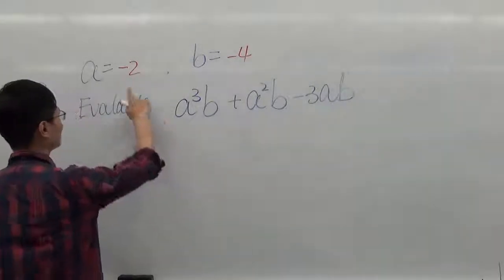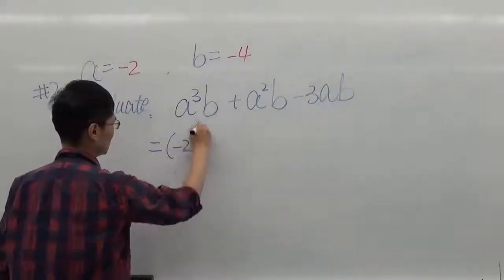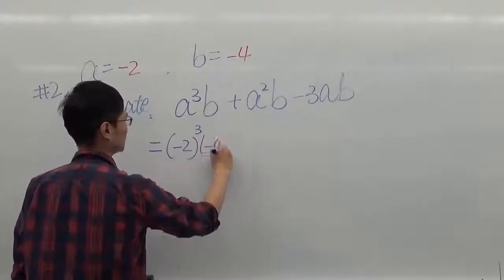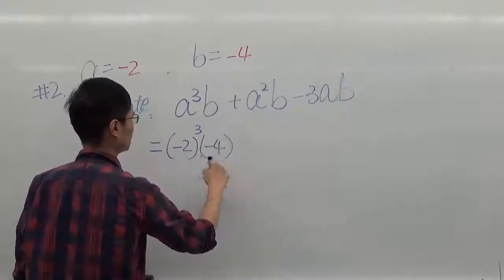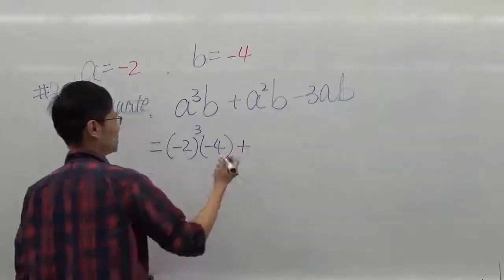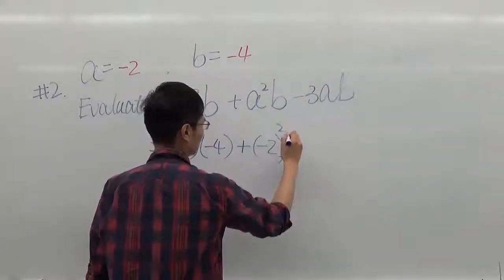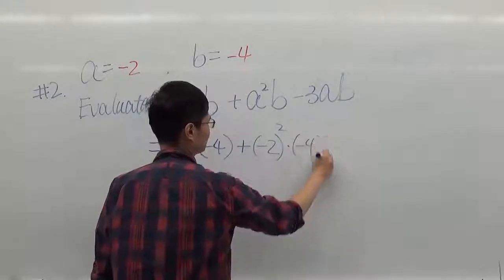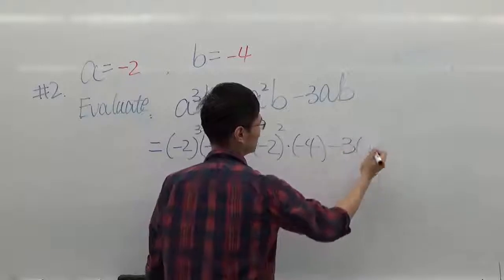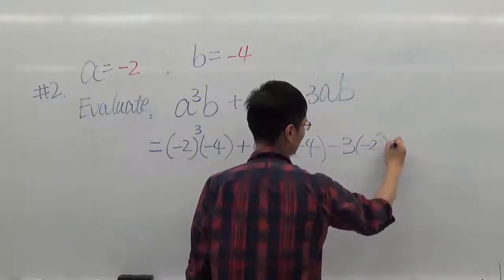So A is negative 2. We're going to write negative 2 to the third, multiplied by negative 4. Whenever it's negative, we get parentheses. The second term we have is plus negative 2 squared times negative 4. The last term is negative 3 times negative 2 times negative 4.